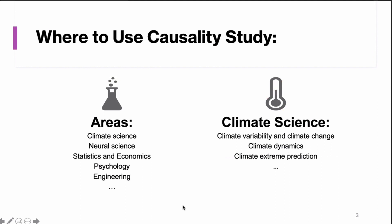Causality study can be applied to many research areas like climate science, neuroscience, statistics, economics, psychology, and engineering. My research mainly combines with climate science — it can be used to study climate variability, climate change, climate dynamics, or climate extreme prediction.